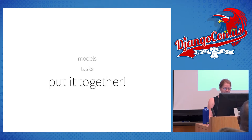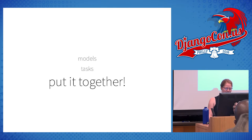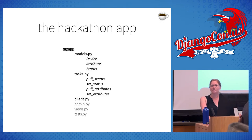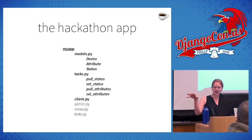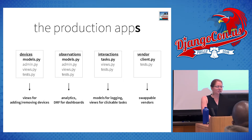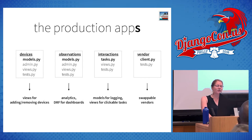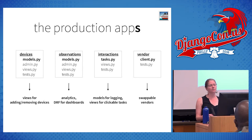Let's put models and tasks together into apps. In a hackathon situation, just toss it all into one app — no one really cares. But if you want to organize it better, I like to split apps this way: Devices has the device model; Observations might have attributes, status, and anything else; Interactions is where the tasks go; and the wrapper around the vendor client API lives in its own app. Each app will grow over time as you add views for managing devices, fancy D3 dashboards in Observations, logging in Interactions, and support for multiple kinds of devices with swappable vendor APIs.